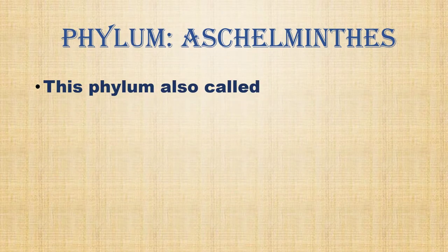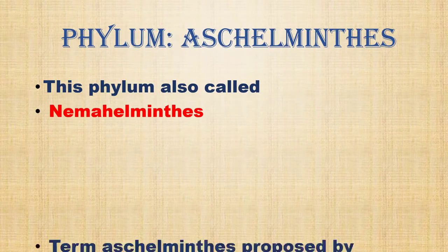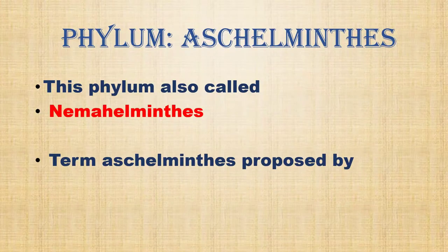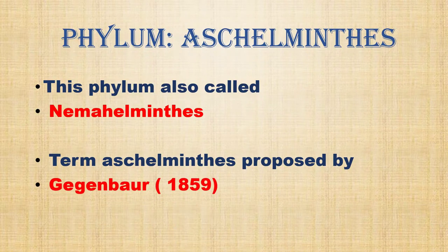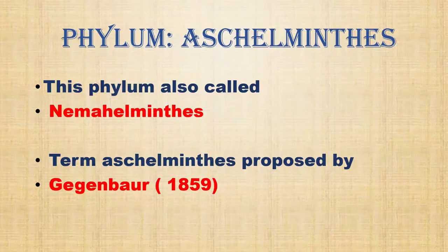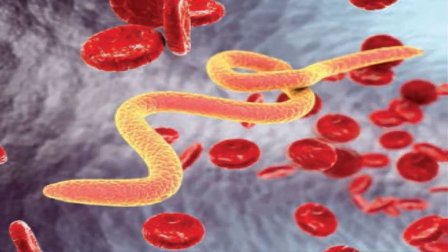Phylum Aschelminthes is also called Nemathelminthes. The term Aschelminthes was proposed by Gegenbaur in 1859. This phylum consists of various worm-like animals.